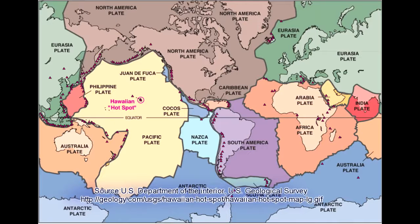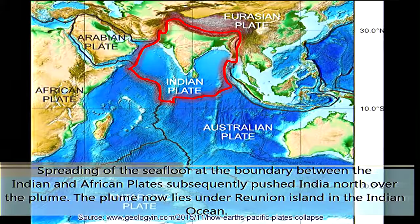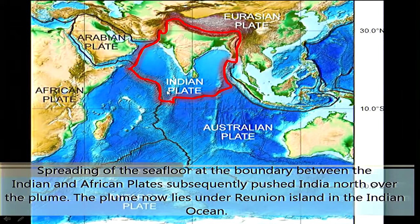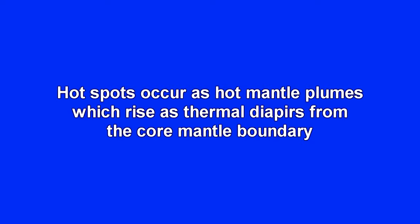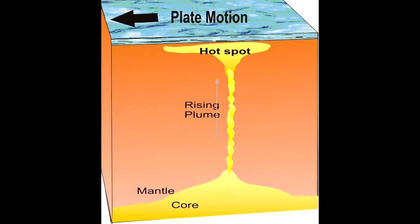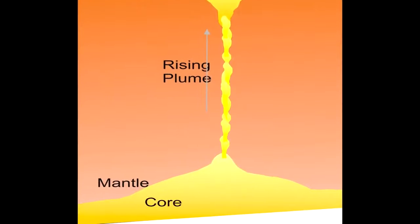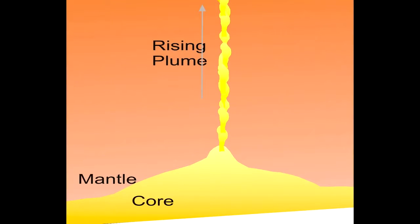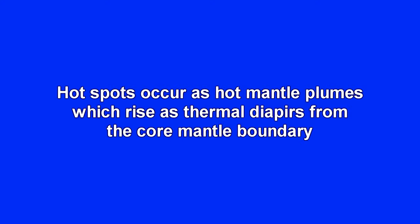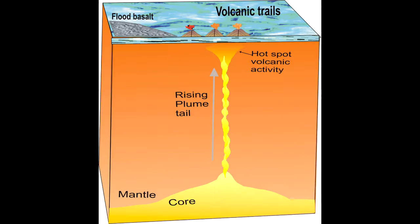The entire earth crust is divided into several plates, and these plates are floating over the mantle. The Indian plate is one of the plates floating over the mantle. There are two important things: plates, and hot spots. Hot spots are deep-seated chimneys connected to the mantle-core boundary — almost 2,900 kilometers deep. They are thermal risers or thermal diapirs, rising in the form of diapirs.